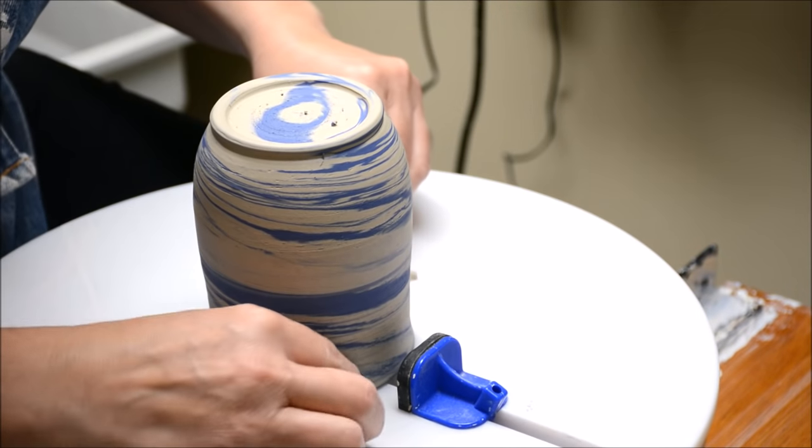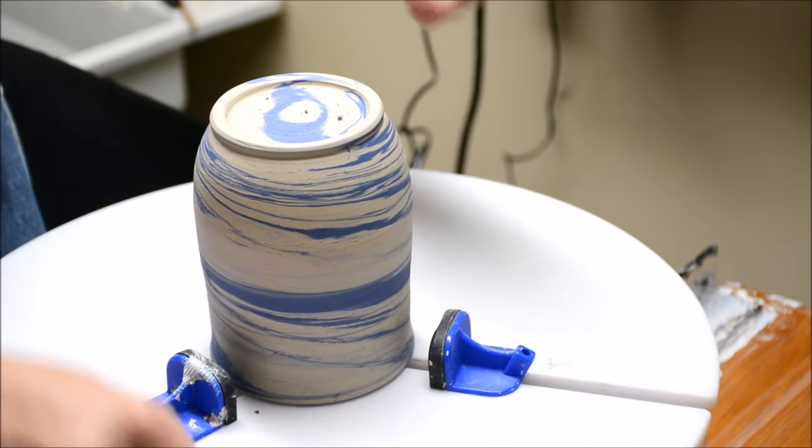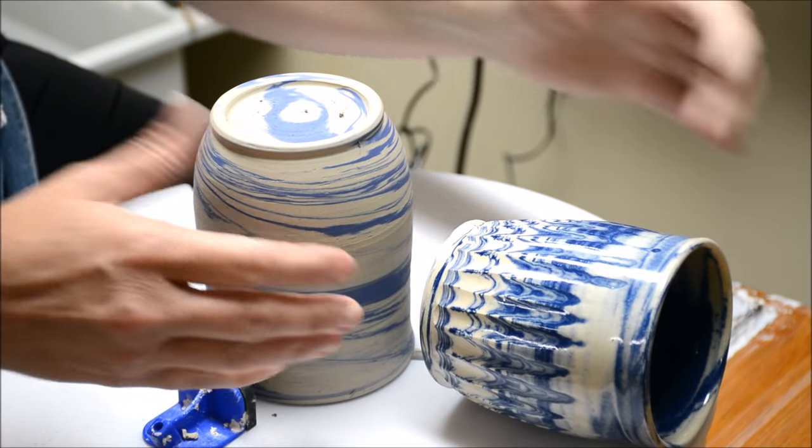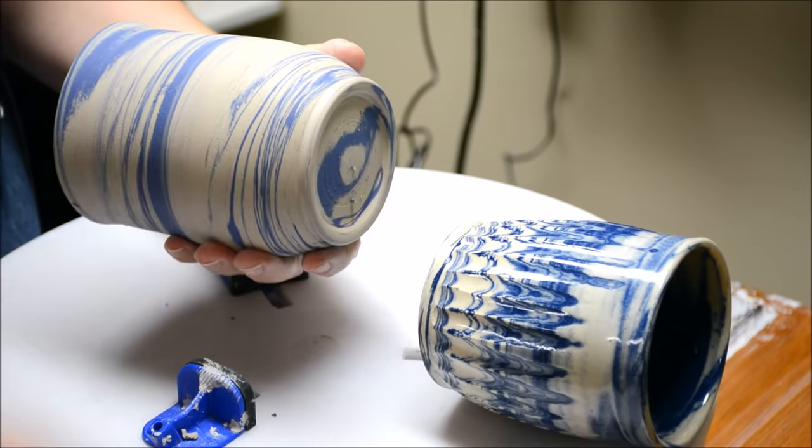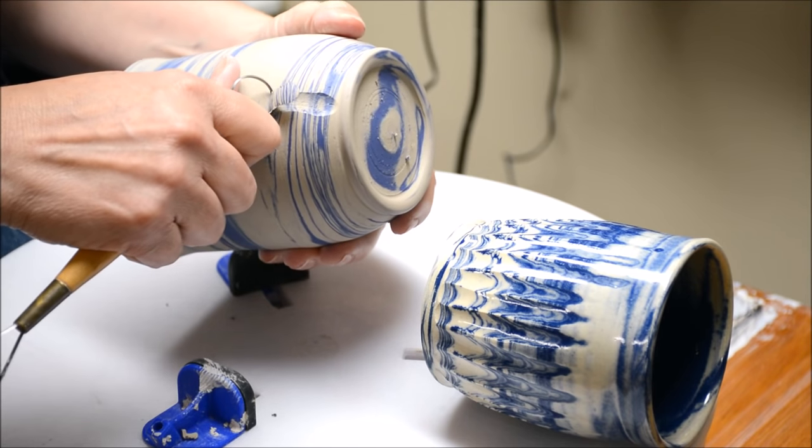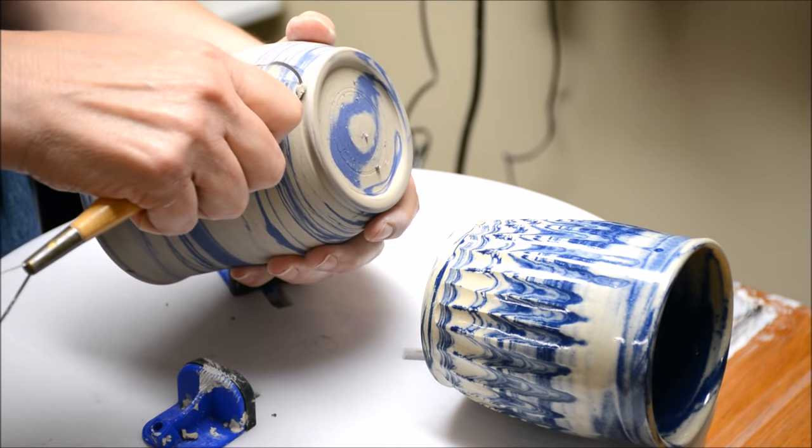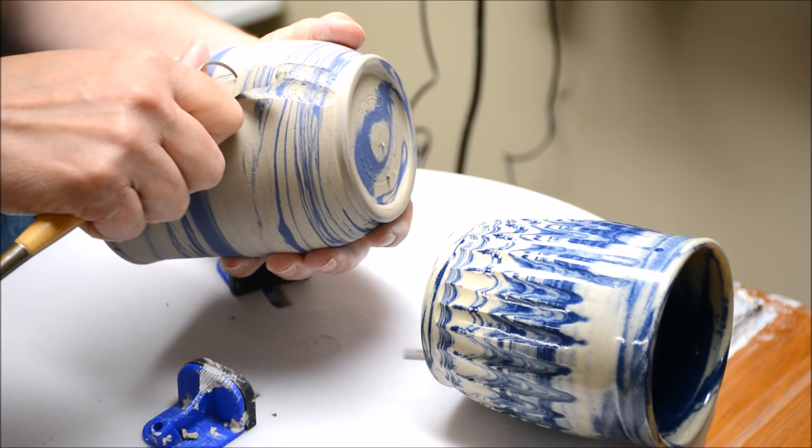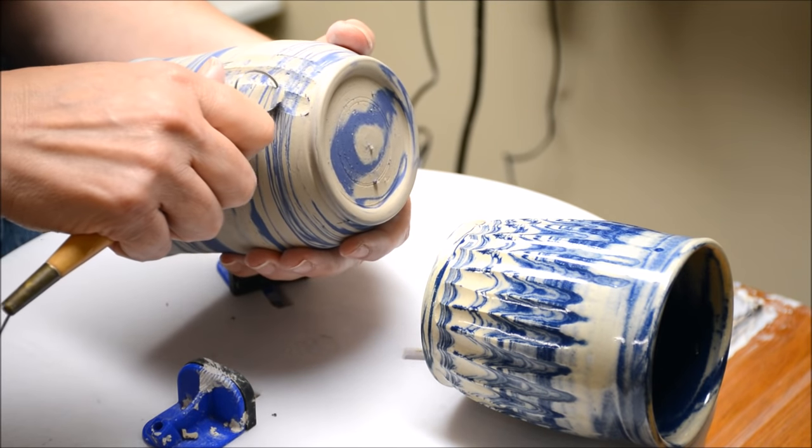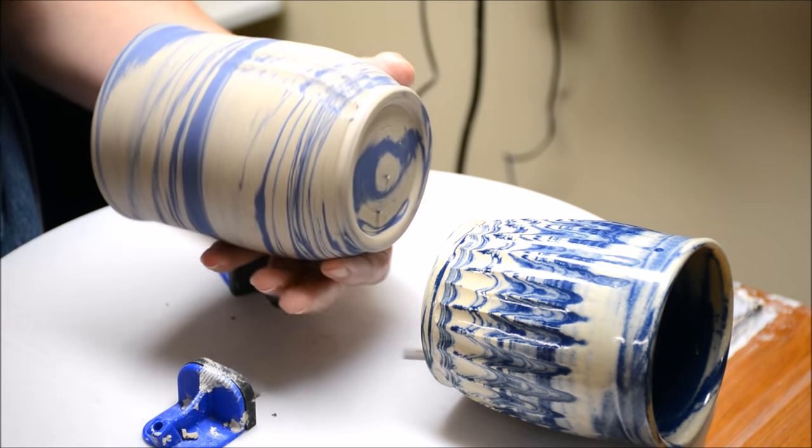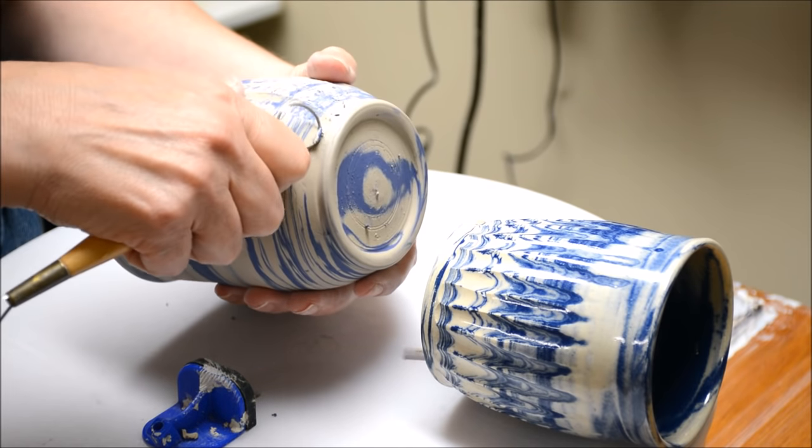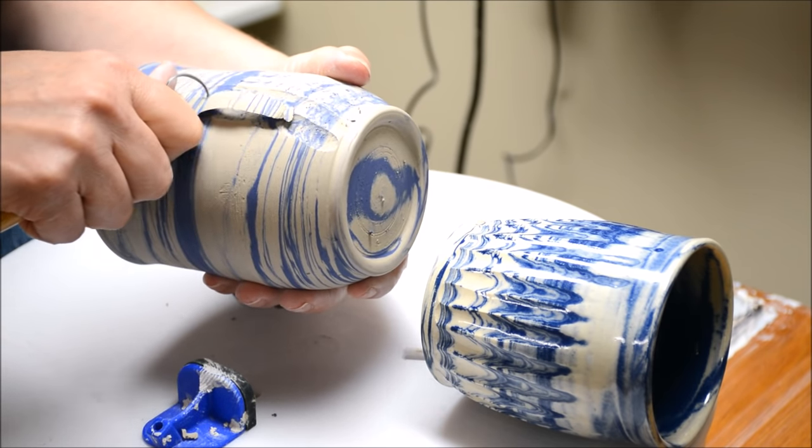So now that I have this cup trimmed, I wanted to show you how you could do faceting like this. So this is a very simple faceted cup. In the case of this, I used just a loop tool. You could use any size loop tool really, but I just kind of go along and peel it as if I'm peeling a potato or something. And as you cut it, you can see that you're revealing the various layers of your marbleization. So this really shows off the qualities that you want with the marbleizing.